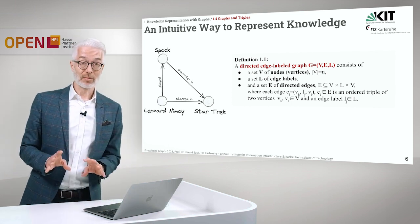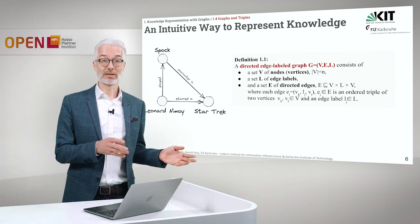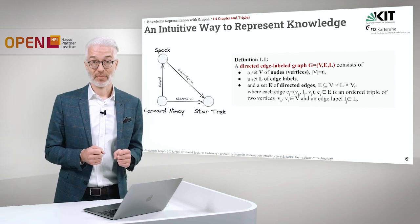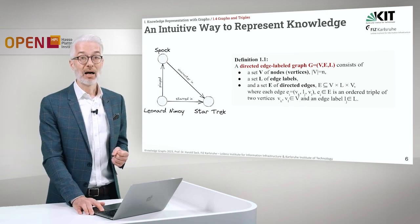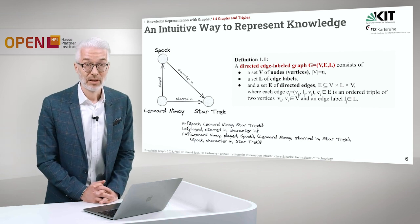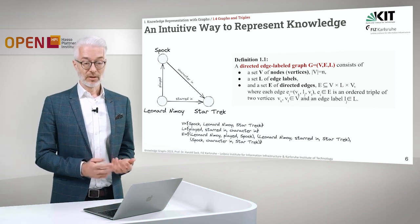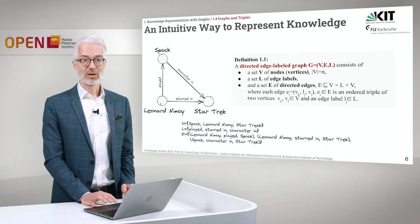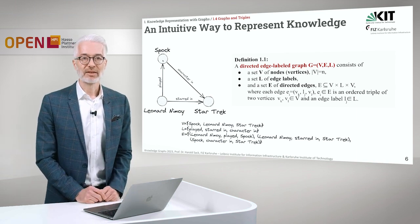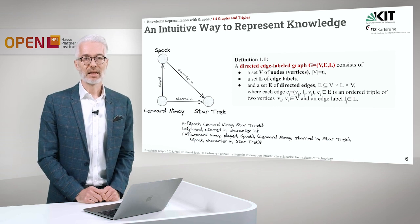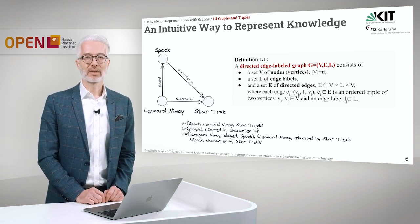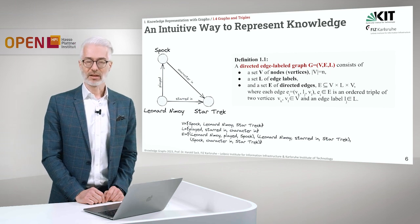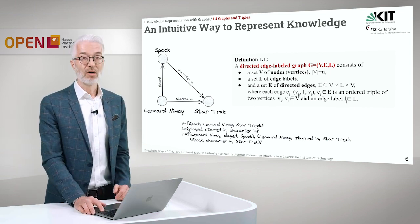Let's apply this to our original example. We had Leonard Nimoy played Spock, Leonard Nimoy starred in Star Trek, and Spock was a character in Star Trek. We have put this down as a small graph representation. The set of nodes V contains Leonard Nimoy, Star Trek, and Spock. The edge labels are played, starred in, and character in. And the edges are Leonard Nimoy played Spock, Leonard Nimoy starred in Star Trek, and Spock is a character in Star Trek. So this is the formal definition of our graph.